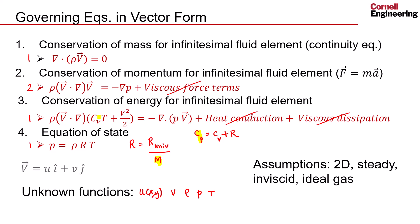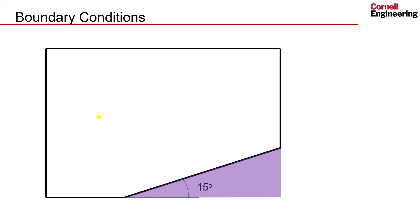The assumptions are: 2D, steady, inviscid, ideal gas. For the boundary conditions, this is the domain we will use. For external flow we have to decide where to put the outer boundaries. The wall boundary condition — because we have inviscid flow, we cannot apply no-slip; instead we apply a no-penetration boundary condition, so the velocity normal to the wall is zero.